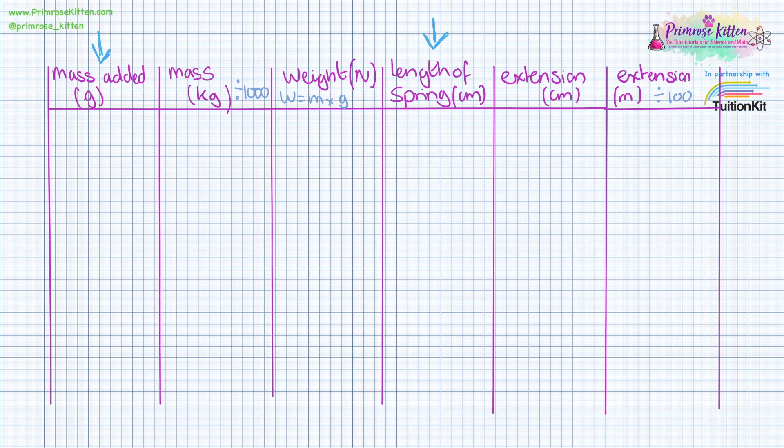So mass added and length of the spring is what we're going to be measuring. And weight in newtons and extension in meters is what we're going to be plotting on a graph.